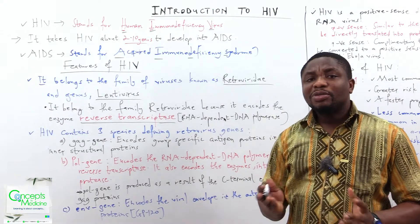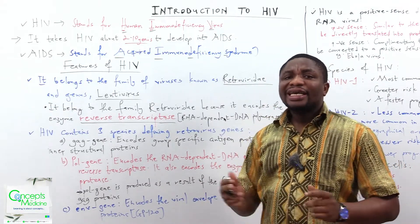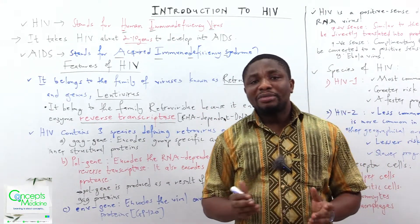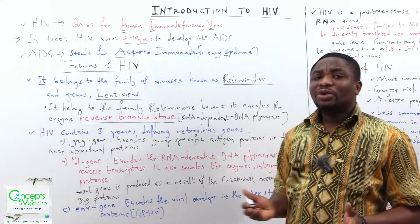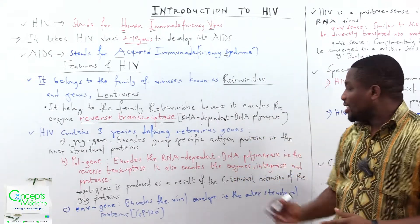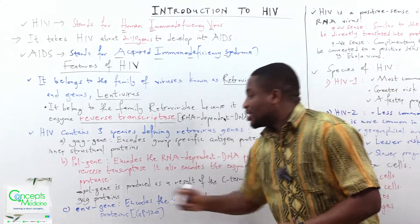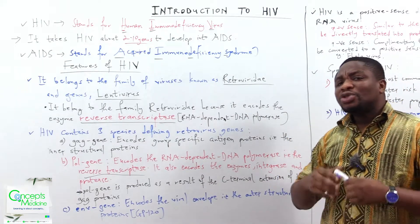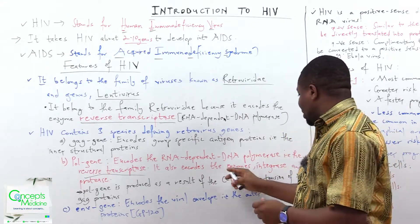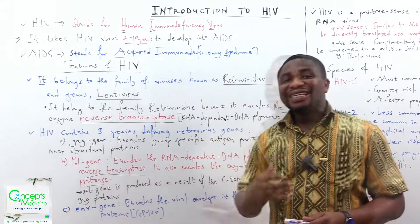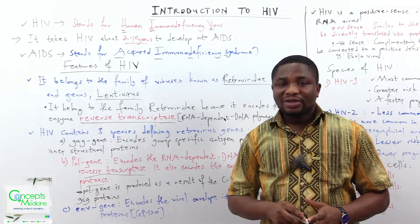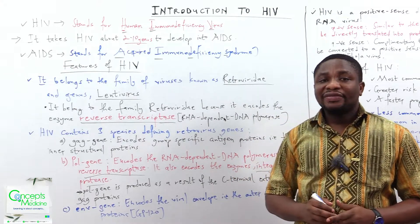The next gene is called the POL gene, where POL stands for polymerase. For the POL gene, it encodes the RNA-dependent DNA polymerase — that is the reverse transcriptase. It also encodes other enzymes such as integrase and protease. These enzymes are also going to play an important role in the pathophysiology of HIV as a whole.